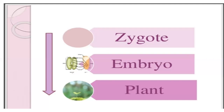Unlike some gymnosperms, where early stages of development show free nuclear divisions, the first division of the zygote in angiosperms is always followed by wall formation, resulting in a two-celled pro-embryo. There are no fundamental differences in the early stages of development of embryos of monocots and dicots, but in later stages there is a marked difference. Hence, their embryogenesis has been considered separately.